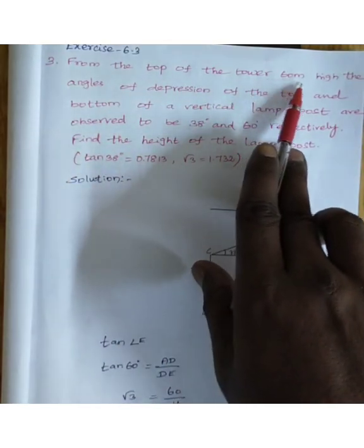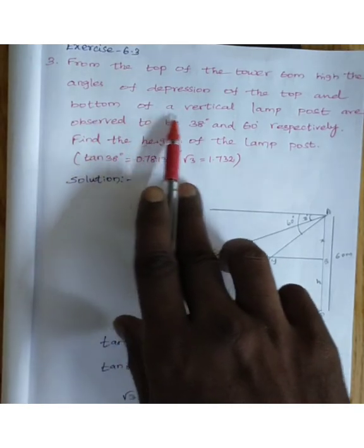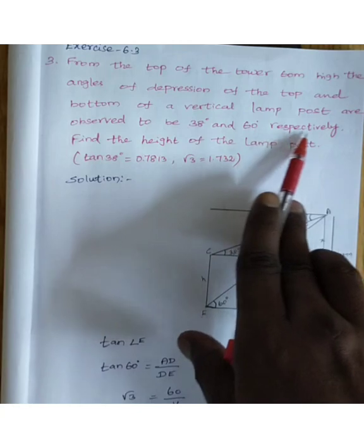From the top of the tower, 60 meters high, the angle of depression of the top and bottom of a vertical lamp post are observed to be 38 degrees and 60 degrees respectively.